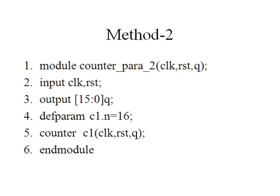Here, in this line number 1, if you look at counter underscore para underscore 2, this is another module. Look at line number 4, parameter, you see there one keyword, DEFPARAM, meaning define parameter, that is the keyword, space C1. C1, if you look at line number 5, it is the instantiation name for that counter. C1 dot n, n is an identifier in that parameterized module. Counter is a parameterized module in slide 1 what we have shown. So C1 dot n is assigned with 16.